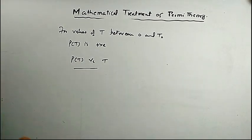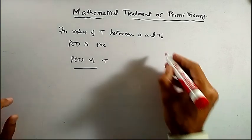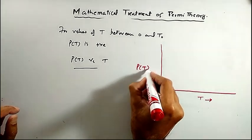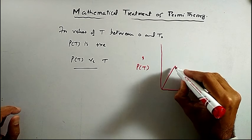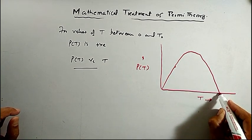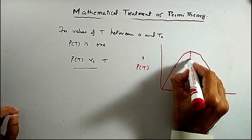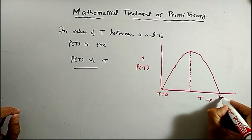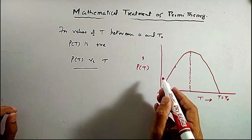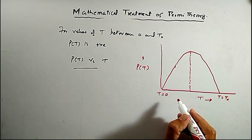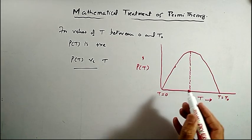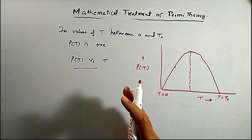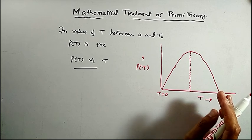If we plot P(T) versus T, we get the beta spectrum. On the graph, the x-axis is the energy of the beta particle T, and the y-axis is the decay probability P(T). The probability is maximum at some intermediate energy, with zero at T = 0 and at T = T₀ (the maximum energy). This theoretical curve agrees well with the experimentally obtained curve, showing that theory and experiment are in good agreement.